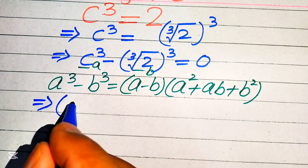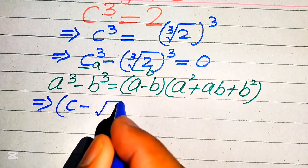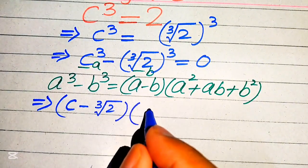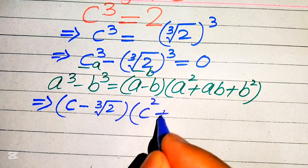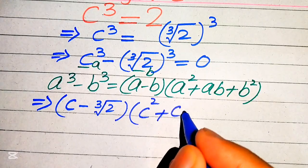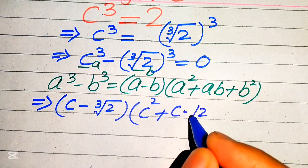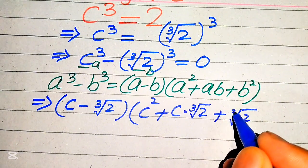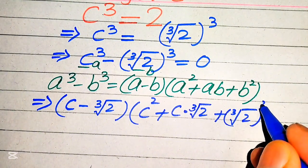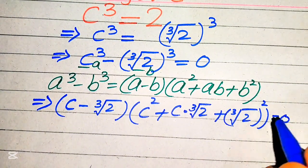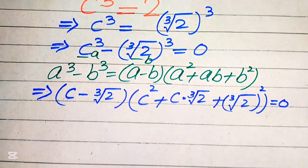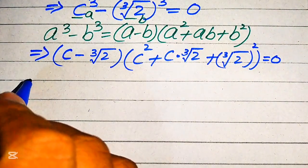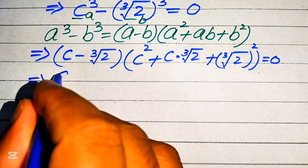After substituting, the equation becomes: (c minus cube root of 2) times (c squared plus c times cube root of 2 plus (cube root of 2) squared) equals zero. Now in the next step we divide this equation into two cases.